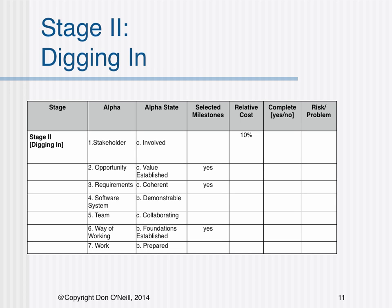Stage 2 entails digging in as a project. Stakeholders are involved. The opportunity value proposition is established. Requirements are coherent. And the software system is demonstrable and feasible. In addition, the team is collaborating, the foundations for the way of working have been established, and the team is prepared to work. The critical selected milestones revolve around opportunity value, coherent requirements, and an established way of working.